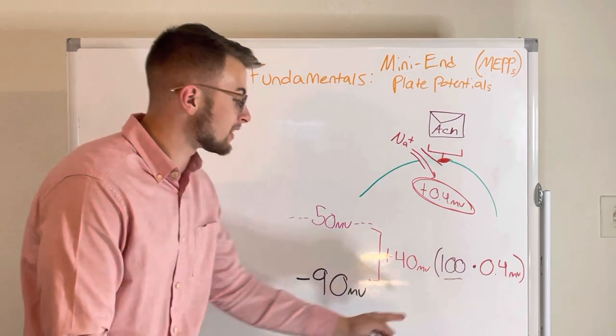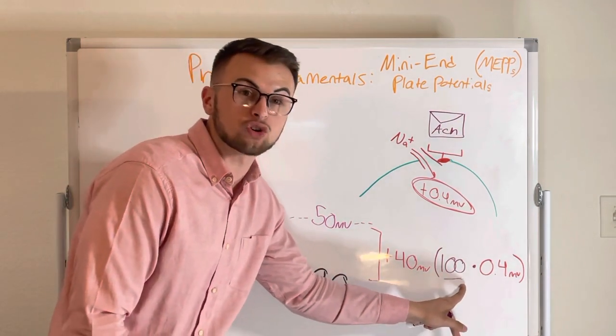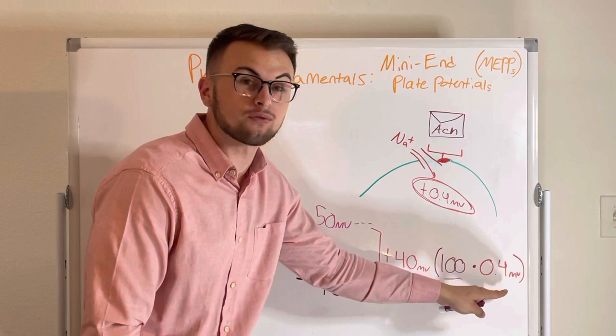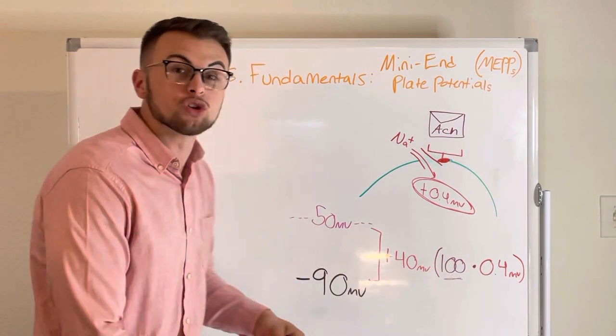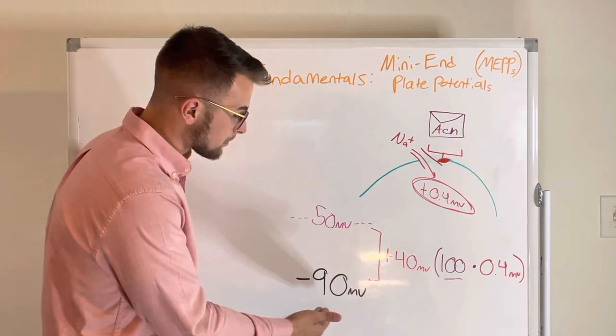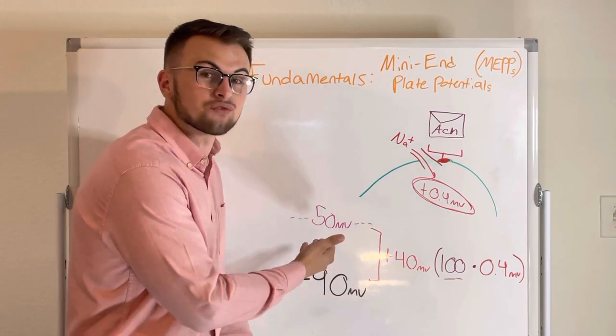we would need approximately 100 vesicles times 0.4 millivolts of acetylcholine to raise that potential from negative 90 to negative 50 millivolts.